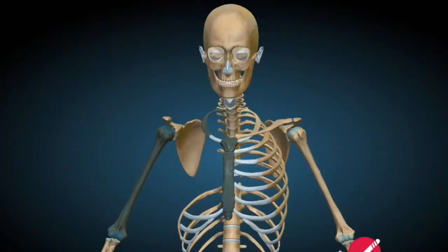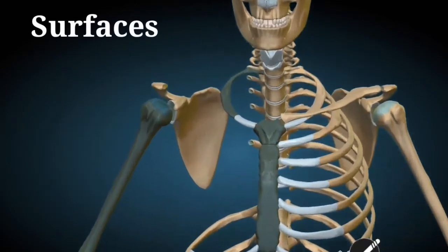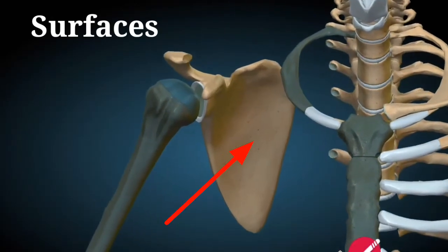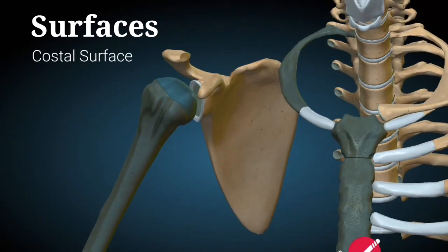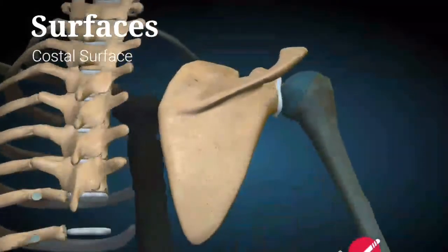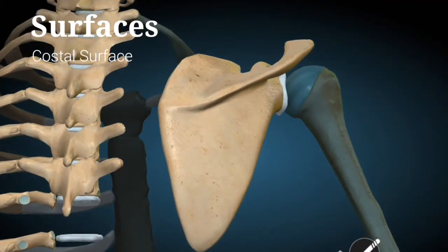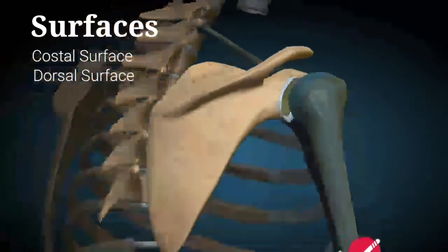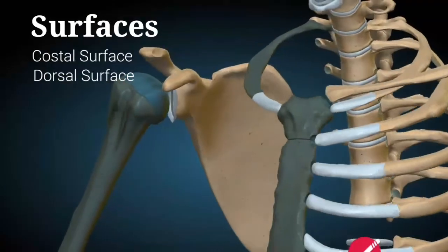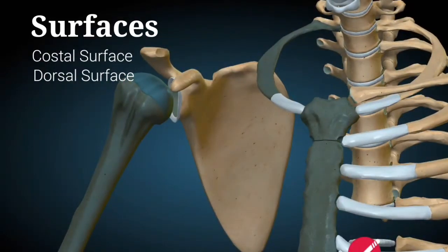The Scapula Bone has two surfaces. The costal surface faces the costal cartilages. On the other side is the posterior aspect of the Scapula Bone, also called the dorsal surface. So this is the dorsal surface and this is the costal surface of the Scapula Bone.